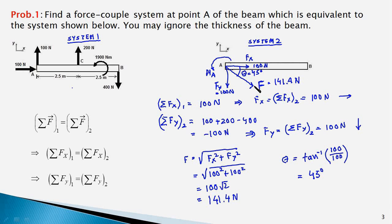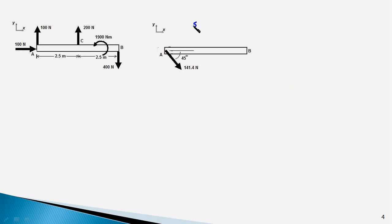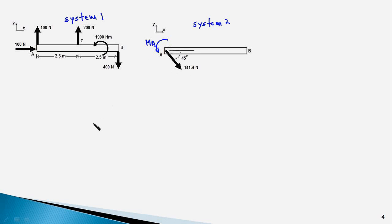We have computed the force and its direction. We now have to compute the moment of the couple and will do so using the second condition. This is our system 2 and the original system is system 1. We have to replace all the forces and the couple by a force-couple acting at point A. The force is 141.4 Newton, and we now apply the second condition: the sum of moments about point A in system 1 equals the sum of moments about the same point in system 2, which is M_A.